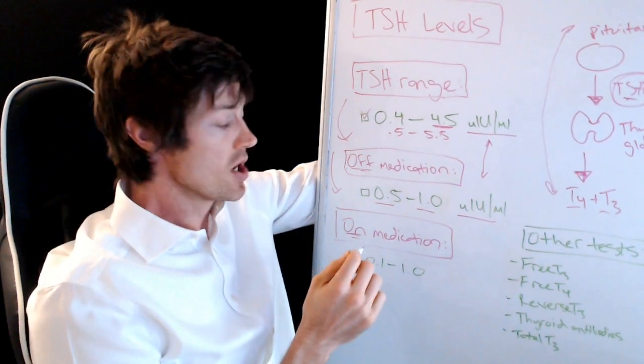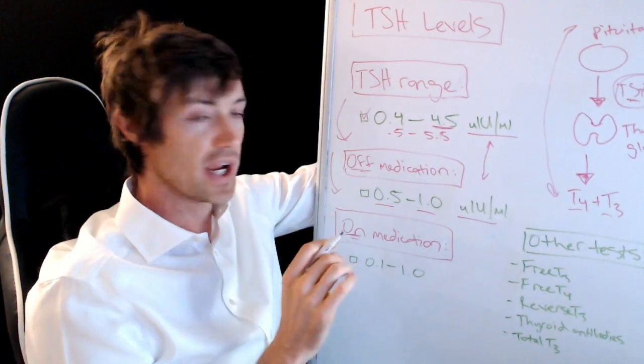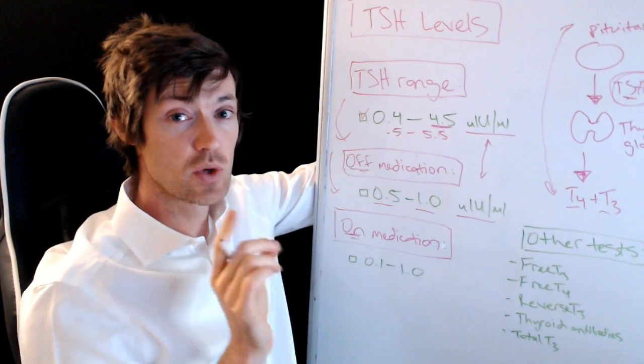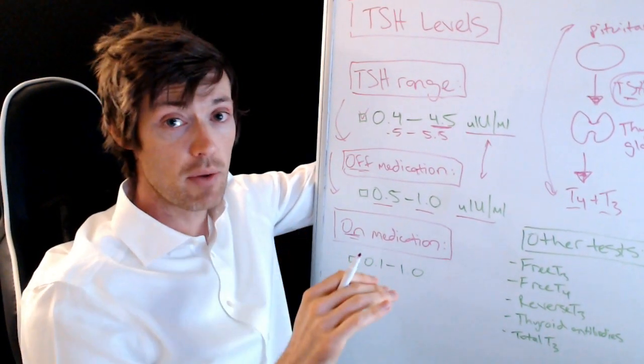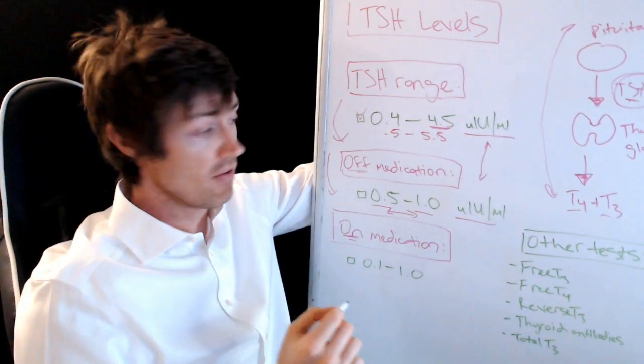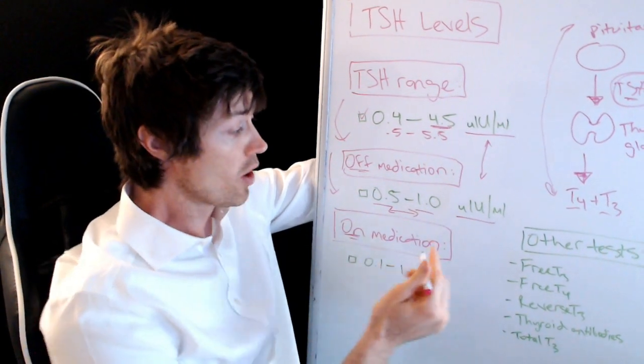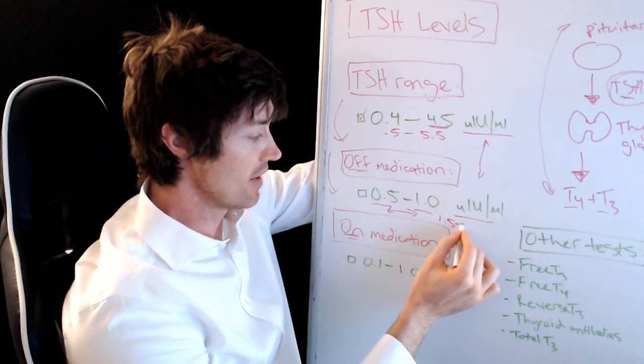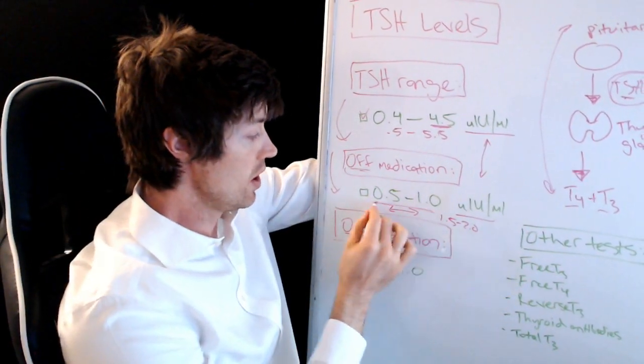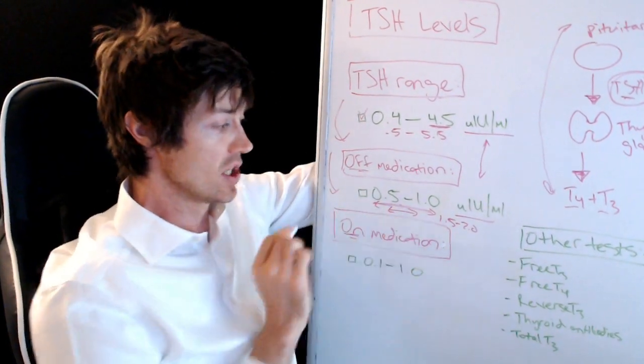So what do you want though if you're off medication? What if you're not taking any medication? You're wondering maybe if you should take thyroid medication or maybe you just want to know, am I healthy? Well, here's the range that I recommend that you fall into. Somewhere between 0.5 and 1.0. And again, the same units as up here. So these are the same units.